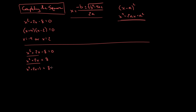Adding 1 to both sides gives 8 plus 1 on the right. I can now factor x squared plus 2x plus 1 into a perfect square: x plus 1, quantity squared, equals 9. I added 1 to both sides to get a perfect square. Now I can solve for x by taking the square root of both sides, giving x plus 1 equals plus or minus 3.